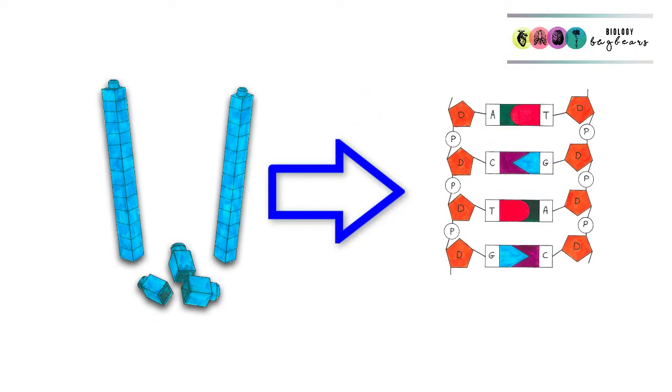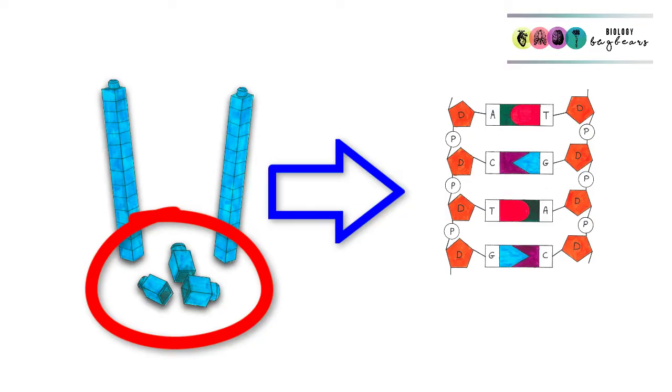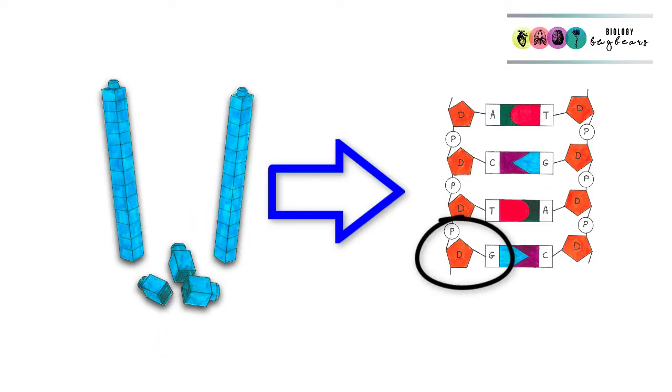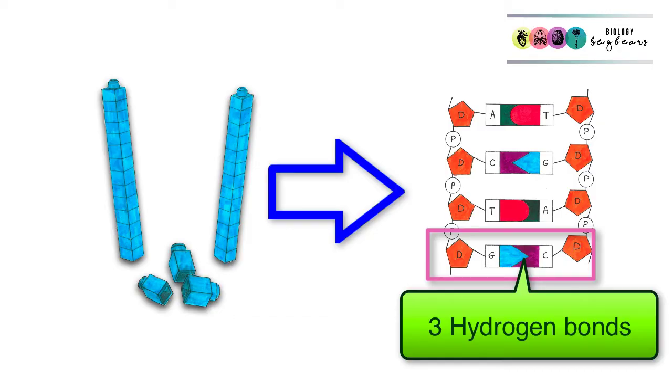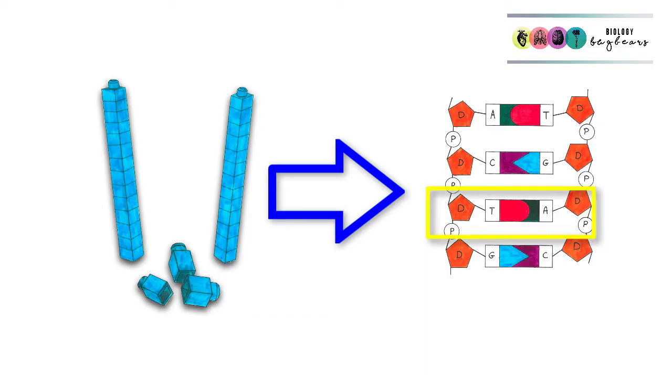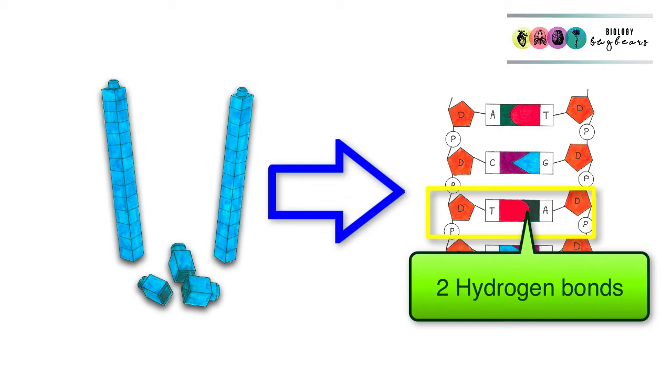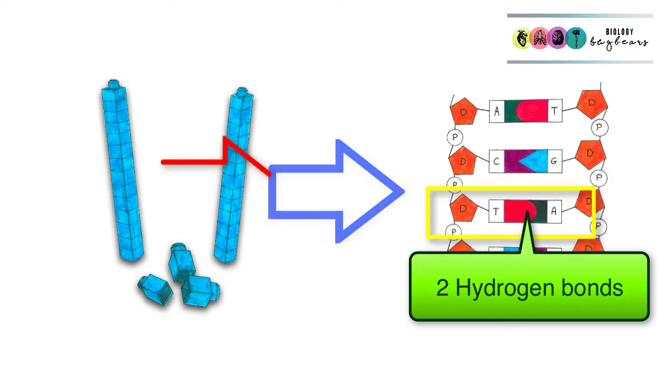Now we understand that the building blocks of DNA are the nucleotides with the phosphate, the five carbon sugar deoxyribose, and one of these nitrogen containing bases. What holds the strands together is complementary base pairing. G will only ever bind with C, held together by three hydrogen bonds. T with A by two hydrogen bonds. This is what holds the two strands together.